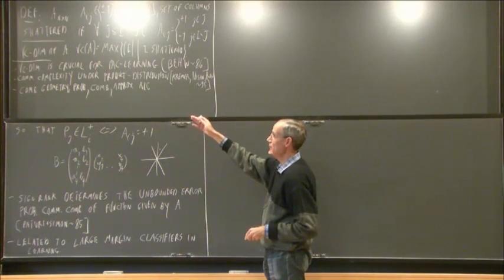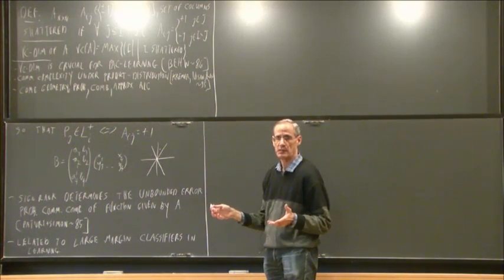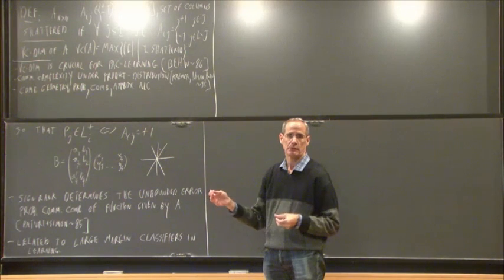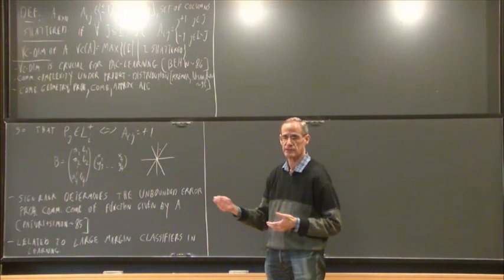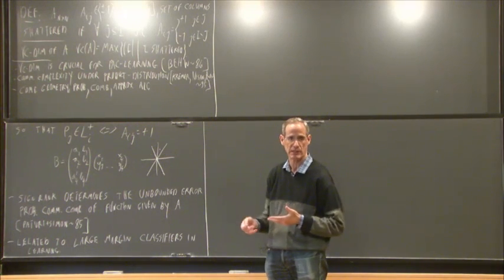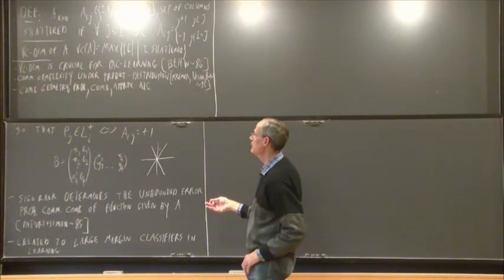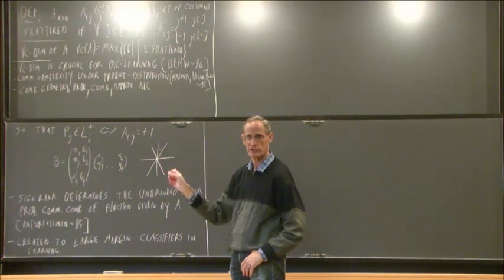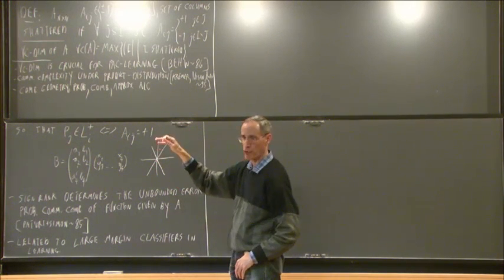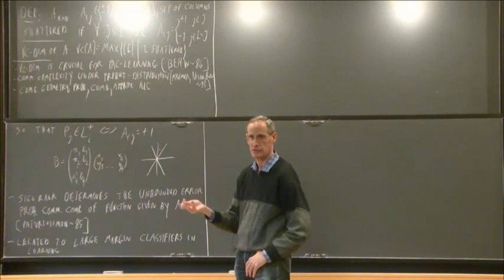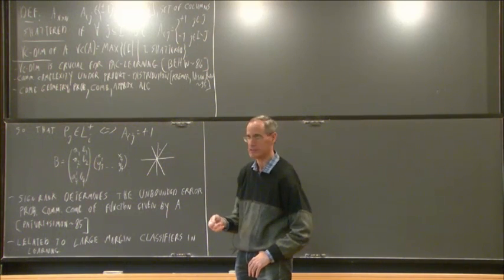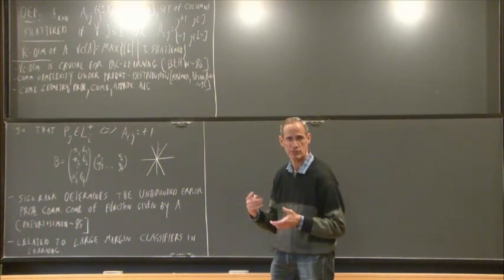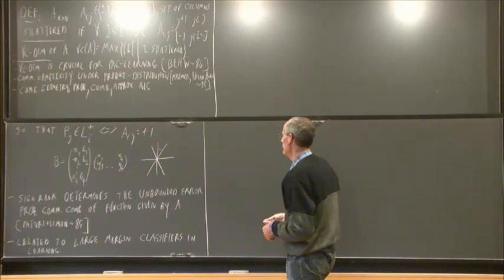One thing we want to understand is the relation between VC dimension and sign rank. Small VC dimension means the matrix looks simple; small sign rank also means it is simple. So it makes sense that if one is big, the other can be big too. In fact, sign rank is always at least the VC dimension, because a shattered set of columns cannot be linearly dependent. We will be interested in the other extreme: how large can the sign rank be?